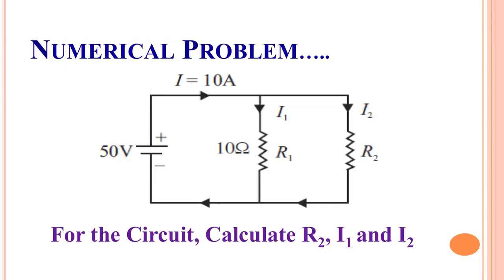It is important to understand how to calculate the equivalent resistance in practical circuits. In one example, a battery of 50 volts causes a current of 10 amperes. Two resistances are connected in parallel — one is 10 ohms, and we need to find the other resistance as well as currents I1 and I2.